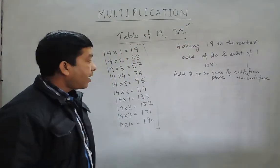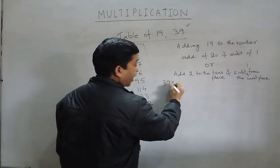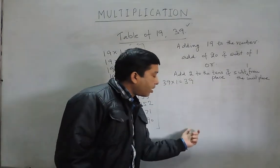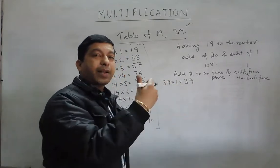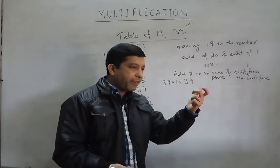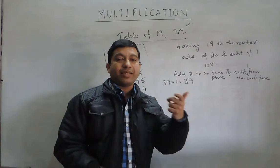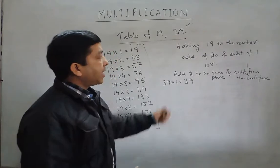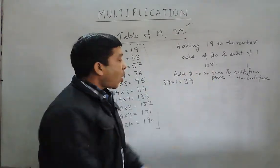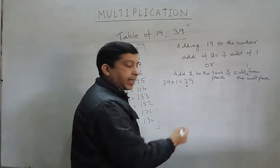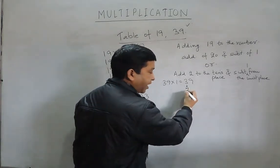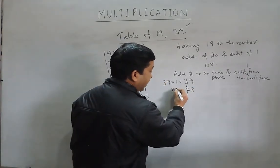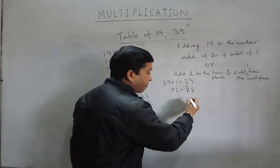Now for the table of 39: everyone knows that 39 into 1 is 39. Adding 39 to a number means adding 40 and then subtracting 1, because this number is very near to a number ending in 0 at the base place. So adding 39 is nothing but adding 40 and then subtracting 1 — or adding 4 to the tens place and then subtracting 1 from the units place. So 39 into 2 becomes 78.